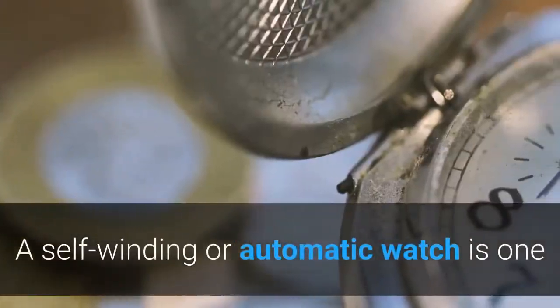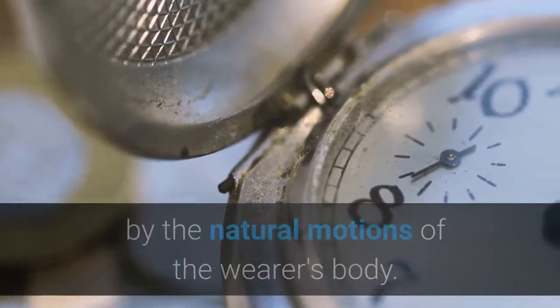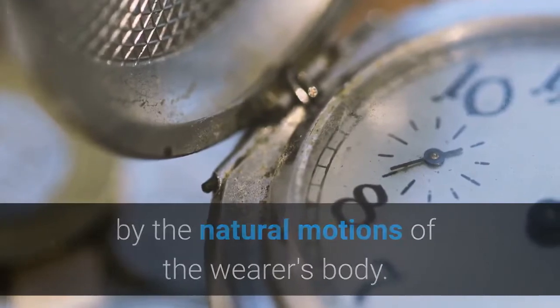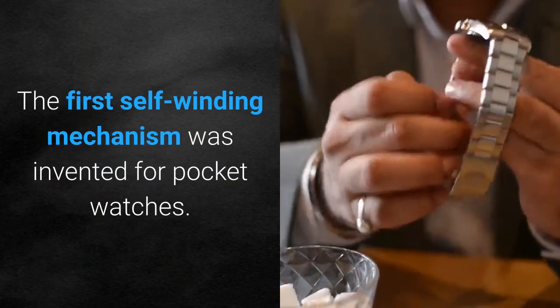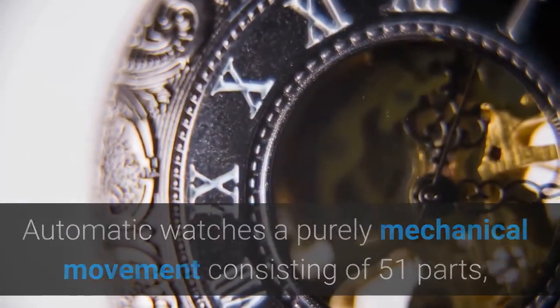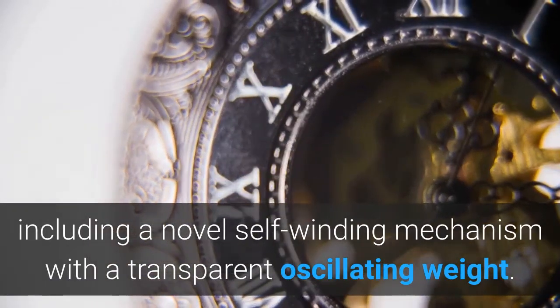A self-winding or automatic watch is one that rewinds the mainspring of a mechanical movement by the natural motions of the wearer's body. The first self-winding mechanism was invented for pocket watches. Automatic watches have a purely mechanical movement consisting of 51 parts, including a novel self-winding mechanism with a transparent oscillating weight.